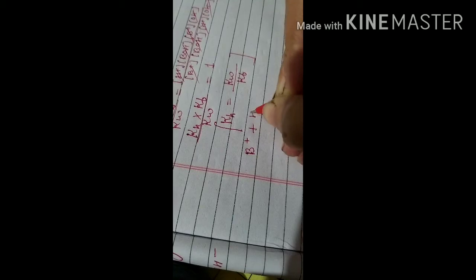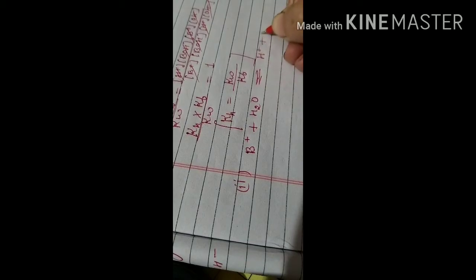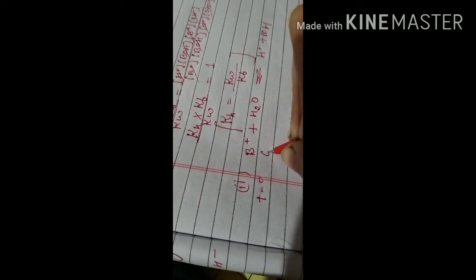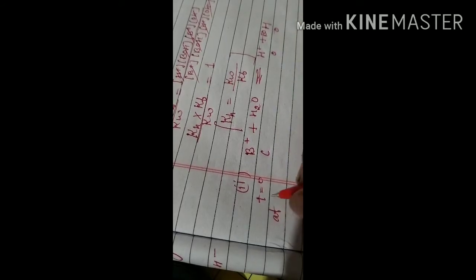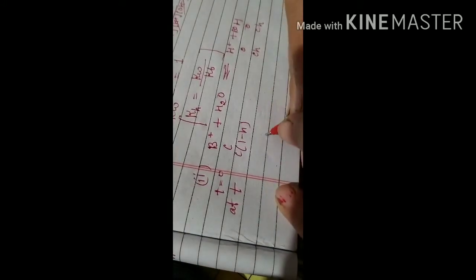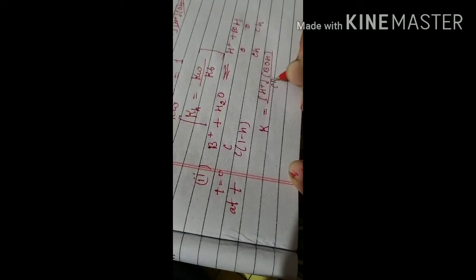Now for the degree of hydrolysis. Consider the cationic hydrolysis: B⁺ + H₂O ⇌ H⁺ + BOH. At time t = 0, the molar concentration of B⁺ is C and products are zero. At time t, the concentration of B⁺ decreases to C(1 − h), and the concentrations of H⁺ and BOH each become Ch. We substitute into the Kh expression.